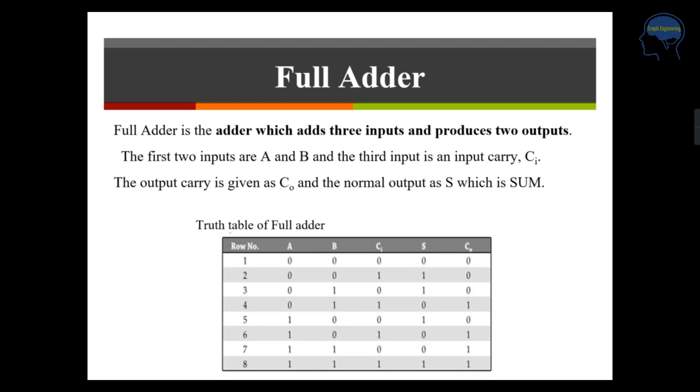Your output is given as C0 and that is your output carry and your sum is S. This is the truth table of your full adder where you have A, B. How many combinations of this A, B and C in is your inputs. Three inputs are there.